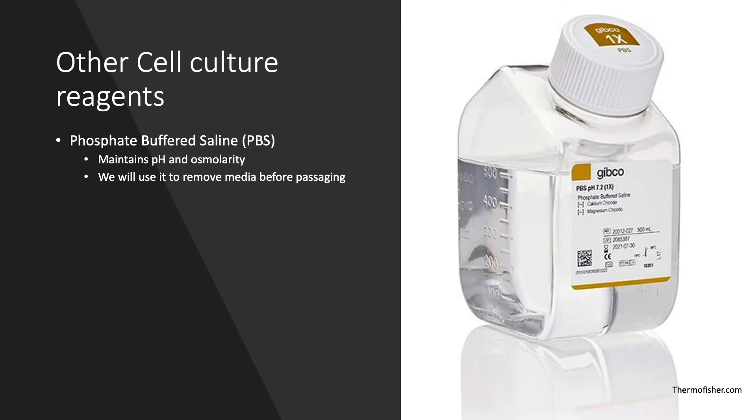Equally as important to these essential materials, cell culture requires additional reagents. Phosphate buffered saline, or PBS, is used in cell culture in order to wash cells. Since we will be working with adherent cells, PBS will be used to rinse the cell monolayer to remove residual media with FBS before passaging. PBS is also important because it maintains physiological pH and osmolarity, which helps keep our cells alive during the wash process.